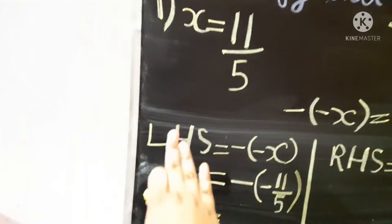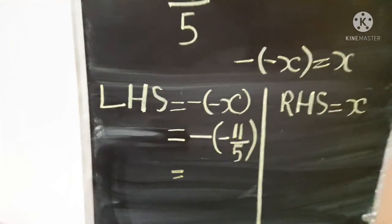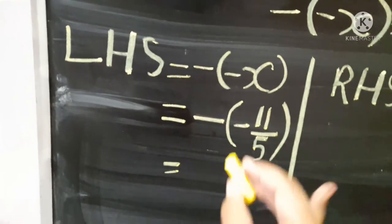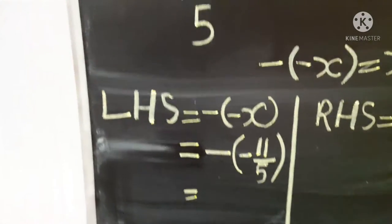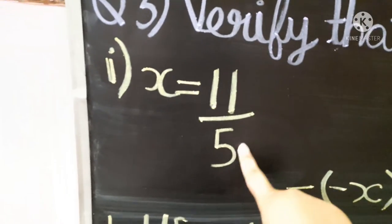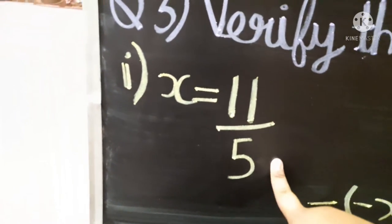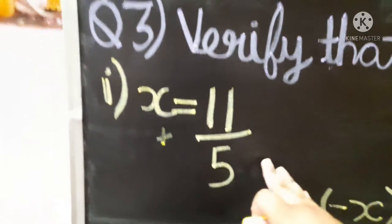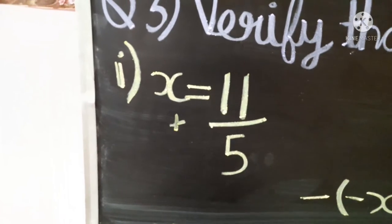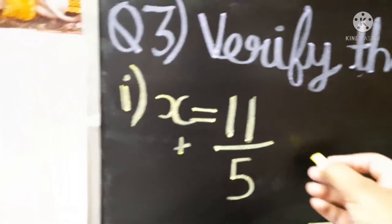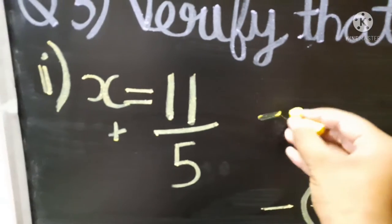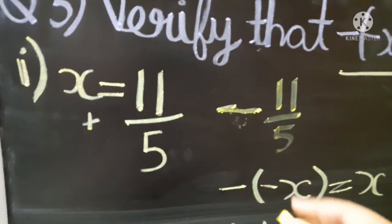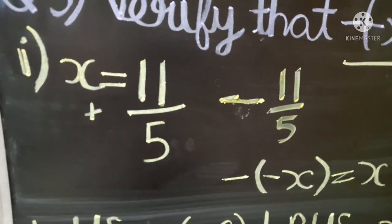11 upon 5 is a positive integer. If we do not put a plus sign, it still means it is positive. If we write a minus sign before a number it shows it is negative. We leave it as just 11 upon 5 to indicate it is positive.